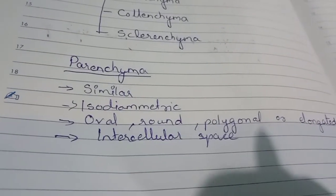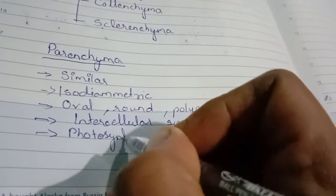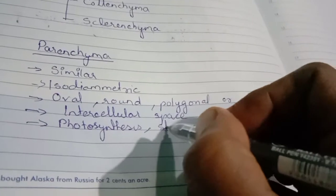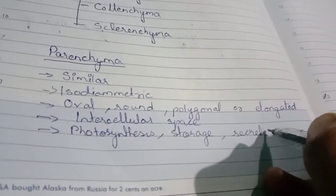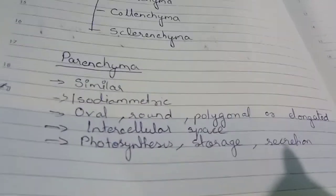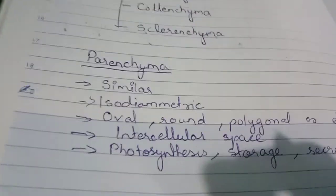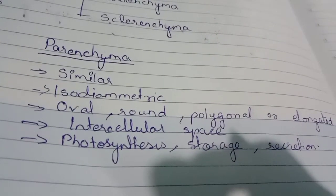Parenchyma cells are loosely arranged. The main functions of parenchyma are photosynthesis — when it consists of chlorophyll; storage — sometimes storing food materials and nutrients for the plant; and secretion of items useful for the plant. Parenchyma is very important because it occupies the major area of the plant body.